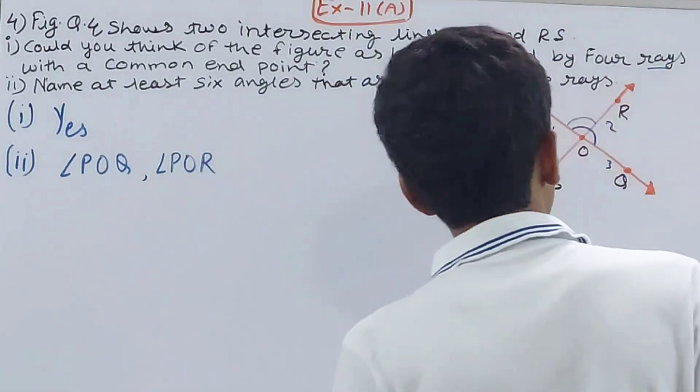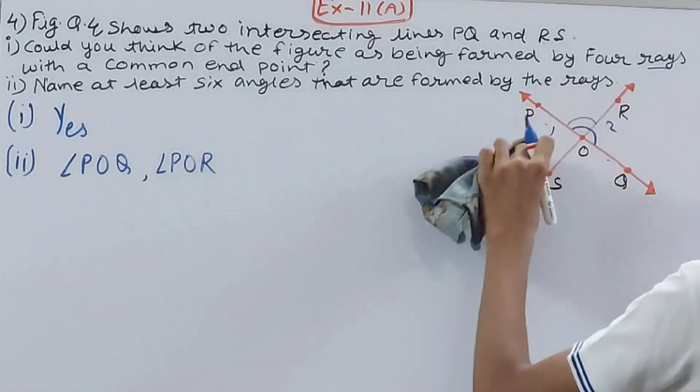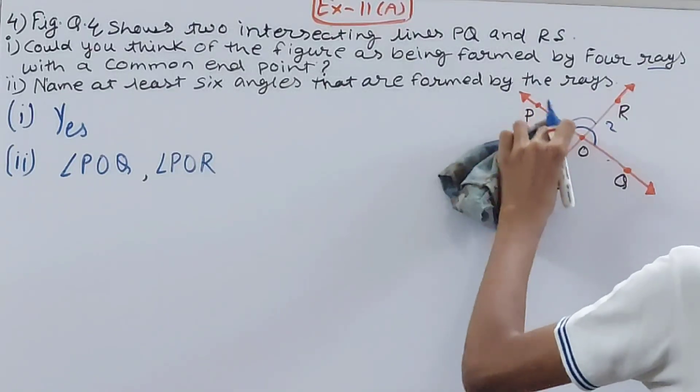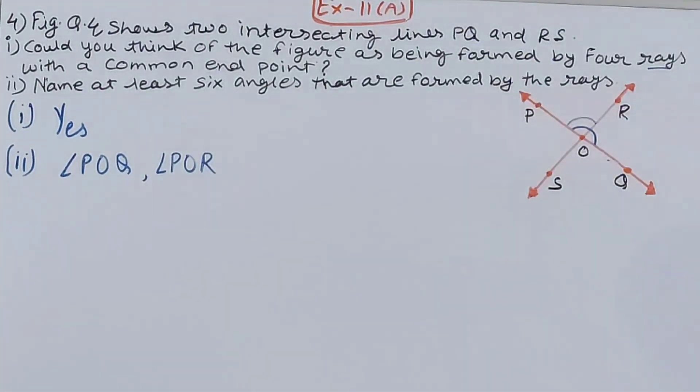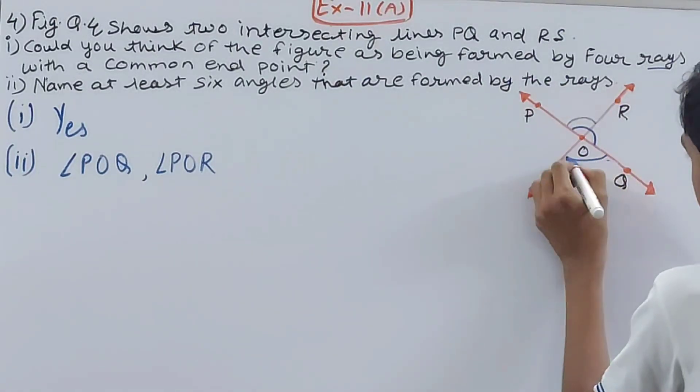So we've had two angles till now. I'll erase these numbers, they're not needed anymore. Now see, I'll begin with the fourth angle. This will be angle QOS.